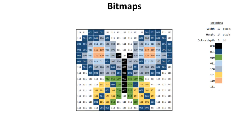Here I have a three-bit colour depth, and you can see again black is still 0, white is still 1, and we've now got these other additional colours as well.